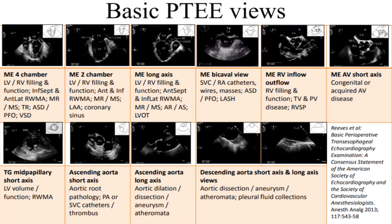The basic perioperative TEE views were established by the American Society of Echocardiography and are similar to the FADE exam's four positions but expanded to 11. The mid-esophageal four-chamber at 0 degrees shows all four chambers, wall motion, filling, contractility, and MR/TR with color Doppler. The two-chamber view at 90 degrees on the omni shows the anterior and inferior walls, left atrium, left ventricle, mitral valve, and left atrial appendage. The long axis at 130 degrees provides a view of the aortic valve, mitral valve, and RV. The bicaval view shows the IVC, SVC, atrial septum, and is most useful for wire localization and PFO assessment.